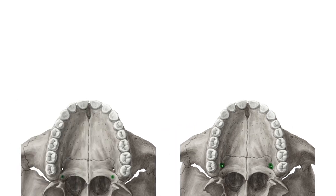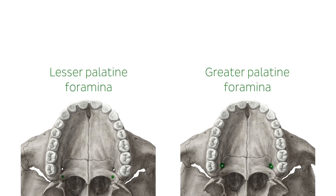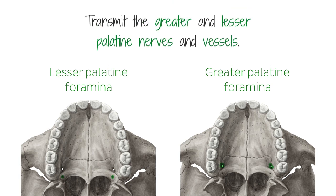Posterolaterally, one centimeter medial from the second maxillary molar, the greater and lesser palatine foramina can be found. We can see the foramina on these images highlighted in green. The greater foramen is seated just anterior to the lesser palatine foramen. They transmit the greater and lesser palatine nerves and vessels respectively.